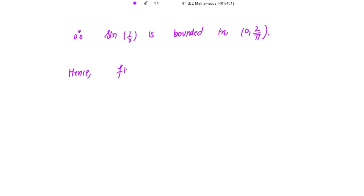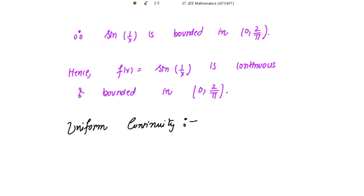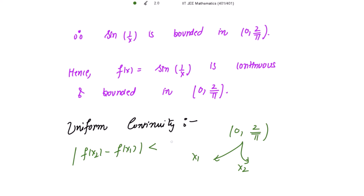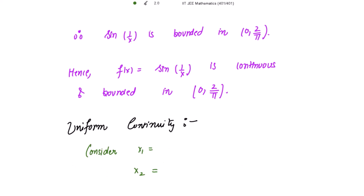Hence f(x) = sin(1/x) is continuous and bounded in the given interval. Now let's check uniform continuity. For that, I need to take two points from this interval and for these points show that for given epsilon, there exists a positive delta such that |f(x2) - f(x1)| < epsilon for |x2 - x1| < delta. Consider x1 = 1/(nπ) and x2 = 2/((2n+1)π). These two points belong to the open interval (0, 2/π).